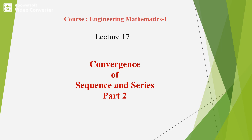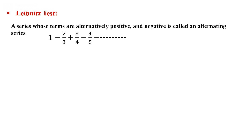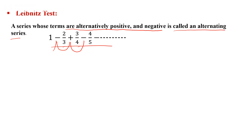Lecture 17: Convergency for Sequence and Series, Part 2. In this lecture we discuss the Leibniz test. First you have to know the alternating series — a series whose terms are alternatively positive and negative signs is called an alternating series. For example, the series 1 minus 2/3 plus 3/4 minus 4/5 has alternating positive-negative signs.